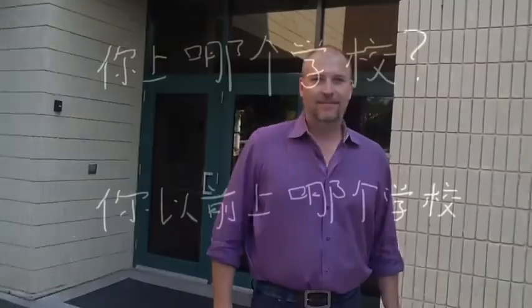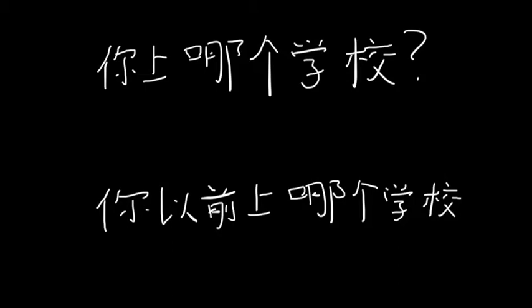Let's go to the drawing board so you can see exactly how it works. In order to ask 'what school do you go to?' it's very simple. In our STPVO format we have 'ni,' which is your subject, then 'shang nage xue xiao.' 'Shang' is going to be your verb — it means 'go to' — and then 'nage xue xiao' means 'which school?'